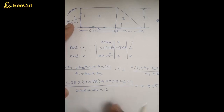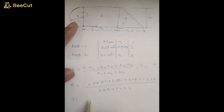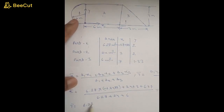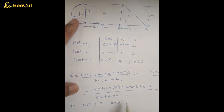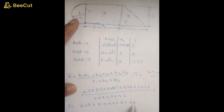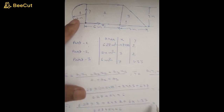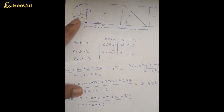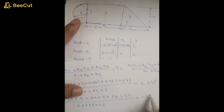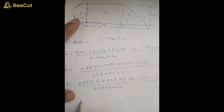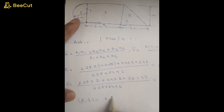Similarly, y-bar equals (A1·y1 + A2·y2 + A3·y3) divided by (A1 + A2 + A3): (6.28 times 2) plus (24 times 2) plus (6 times 1.33), all divided by (6.28 plus 24 plus 6). Calculating from the calculator, y-bar equals 1.890 meters. So the centroid of this composite shape is at x-bar, y-bar equals 2.995, 1.890.